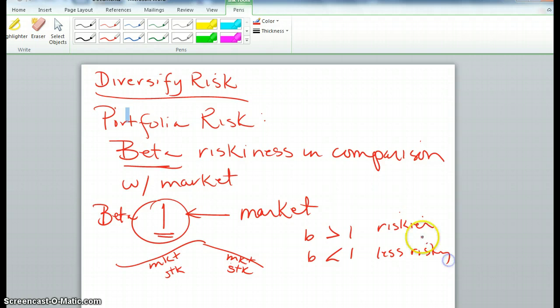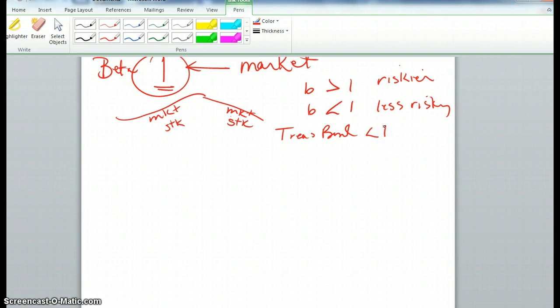So we could say that if you own treasury bonds, you know U.S. savings bonds, those will have a beta of less than 1 because they're not as risky as the market.